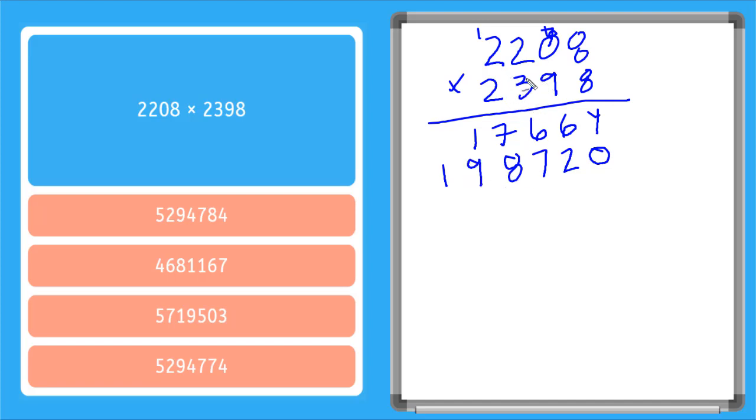Moving to my hundreds column now. So I add a zero in the ones and a zero in the tens. Three times eight is 24. I put a four down there. So now I have a two up here. Three times zero is zero, but I have that two. Three times two is six. And three times two again is also six. Great.